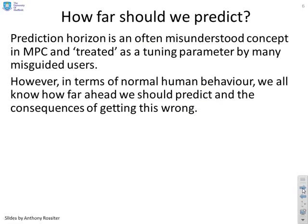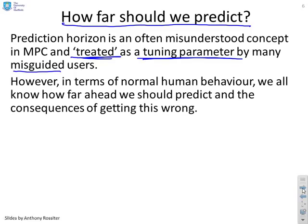How far ahead should you predict? The prediction horizon is an often misunderstood concept in the literature and in predictive control — many people treat it as a tuning parameter, but it's not actually a tuning parameter. In terms of normal human behaviour, we all know how far ahead we should predict and the consequences of getting this wrong. All you need to do is reflect on what humans do and you will get the prediction horizon correct.